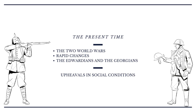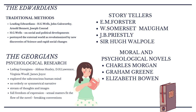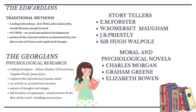Novels of the present time — belonging to the 20th century — are known for the after-effects of the two World Wars. There were rapid changes, and novels divided into two sections: the Edwardians and the Georgians. These novels reflect upheavals in social conditions. The Edwardians followed the traditional methods. The leading Edwardians were H.G. Wells, John Galsworthy, Arnold Bennett, and Joseph Conrad. H.G. Wells reflected on social and political developments and portrayed the external world as revolutionized by new discoveries of science and rapid social changes.